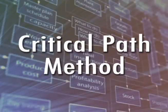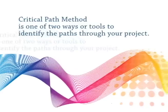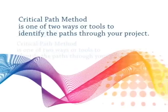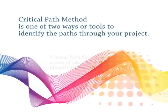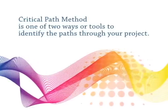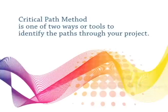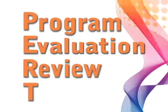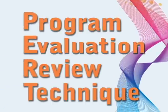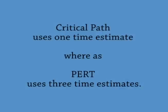Let's talk about the Critical Path Method. The Critical Path Method is one of two tools that you can use to identify the paths through your project. The other way is called PERT, Program Evaluation and Review Technique. The difference between Critical Path and PERT is that Critical Path uses one time estimate whereas PERT uses three time estimates.